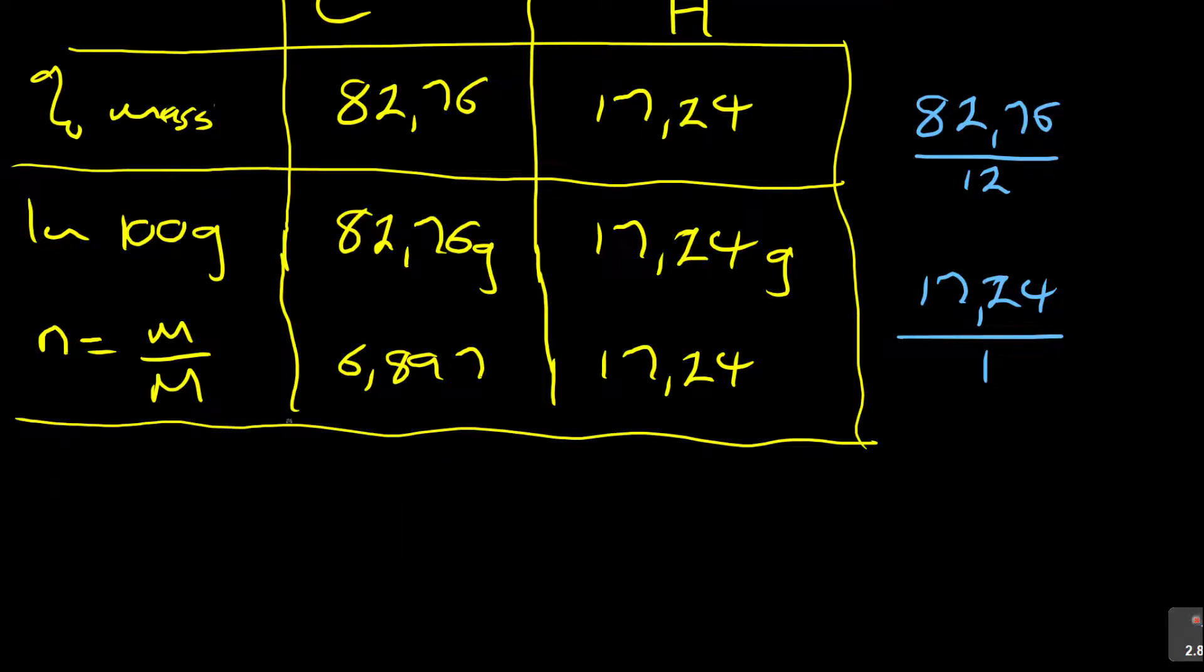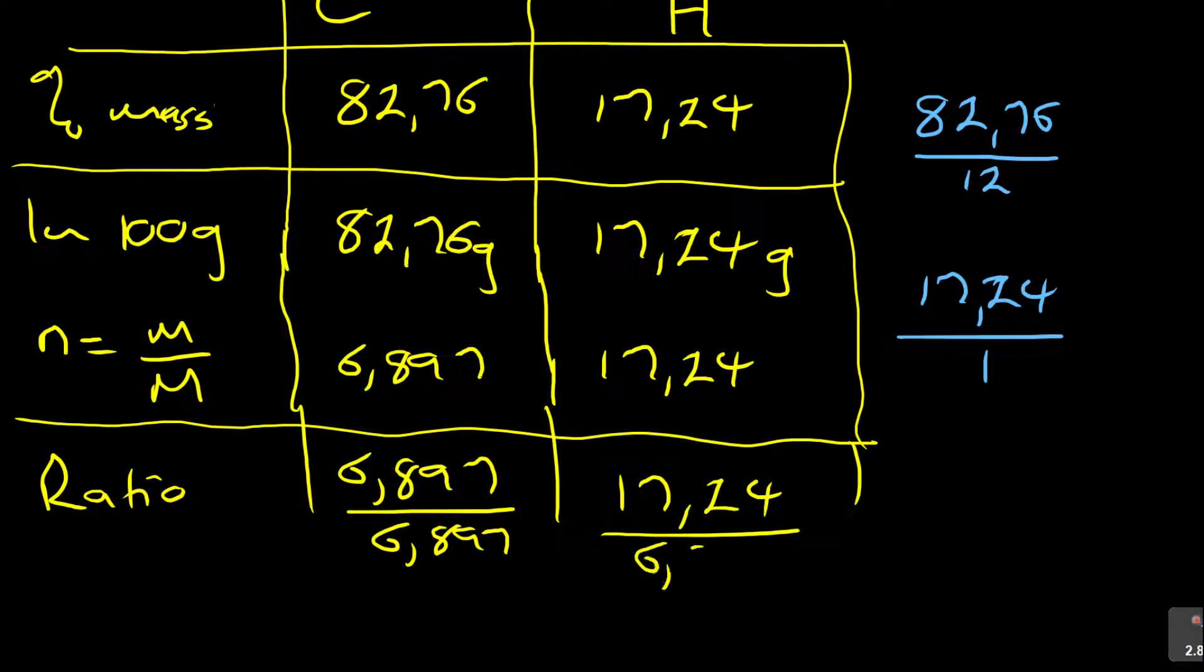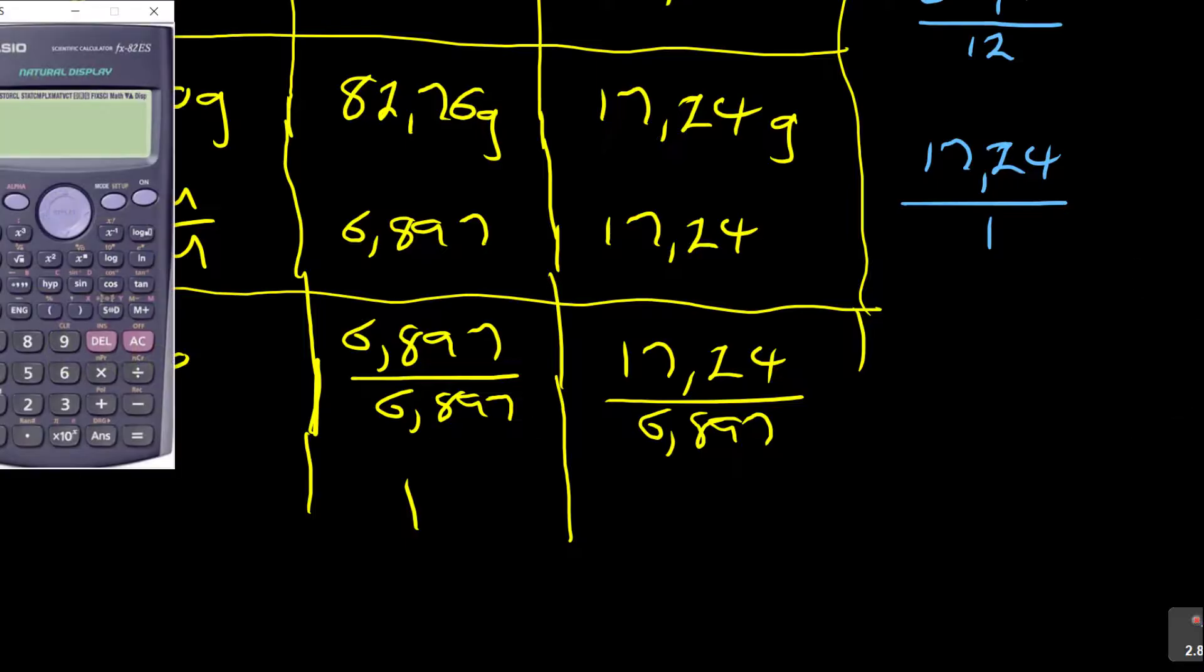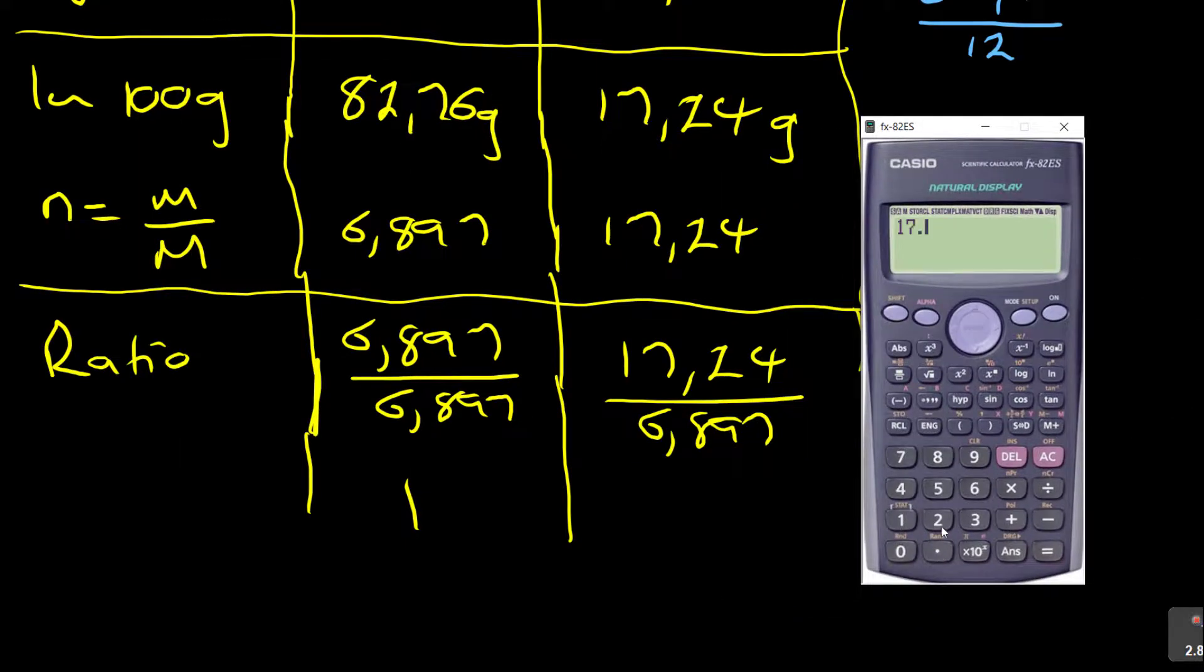Then when you're done, these are the moles. And then you come back to say ratio. So you're going to say 6.897 over 6.897, 17.24 over 6.897. So the ratio here will give you 1 is to what? If we're looking at that, it will then give us 17.24 divided by 6.897, which is 2.499, which is 2.50.